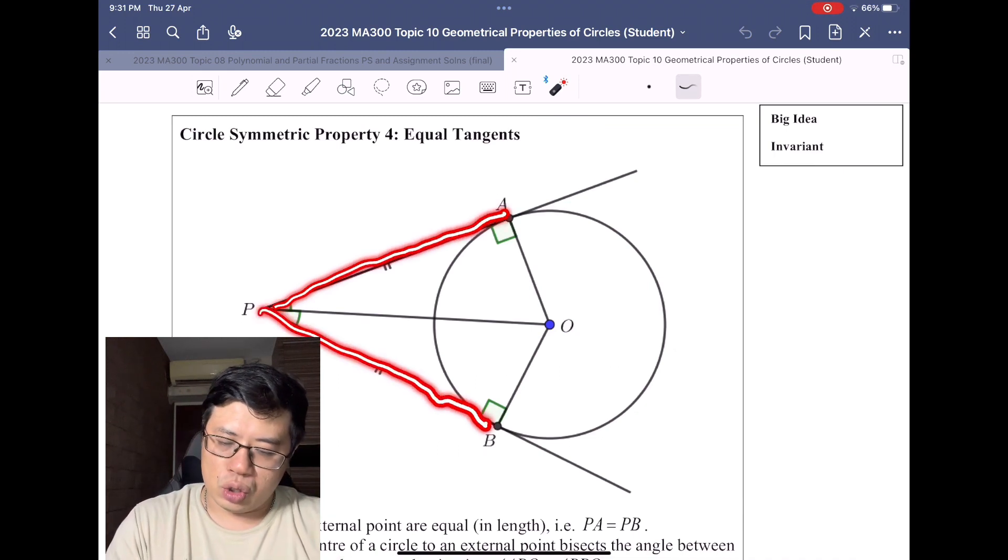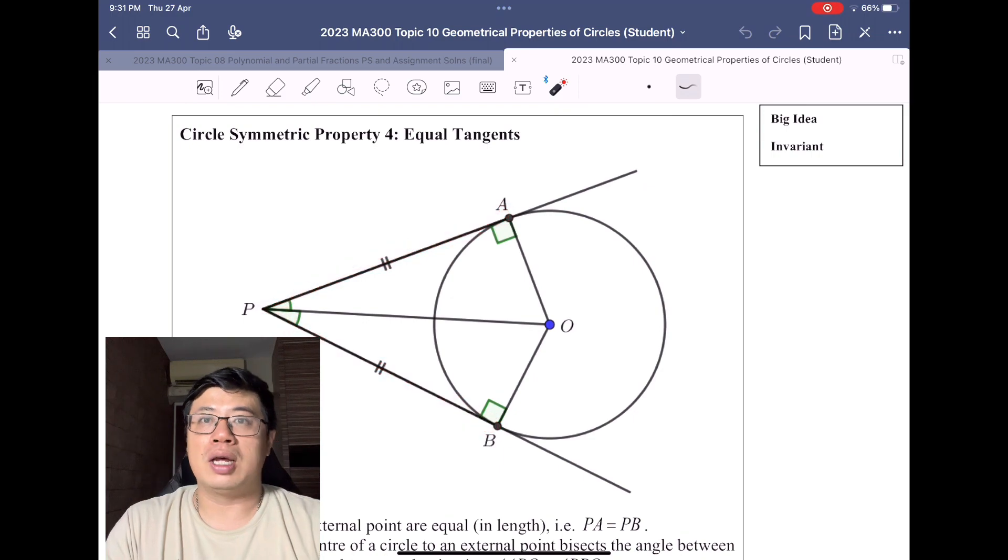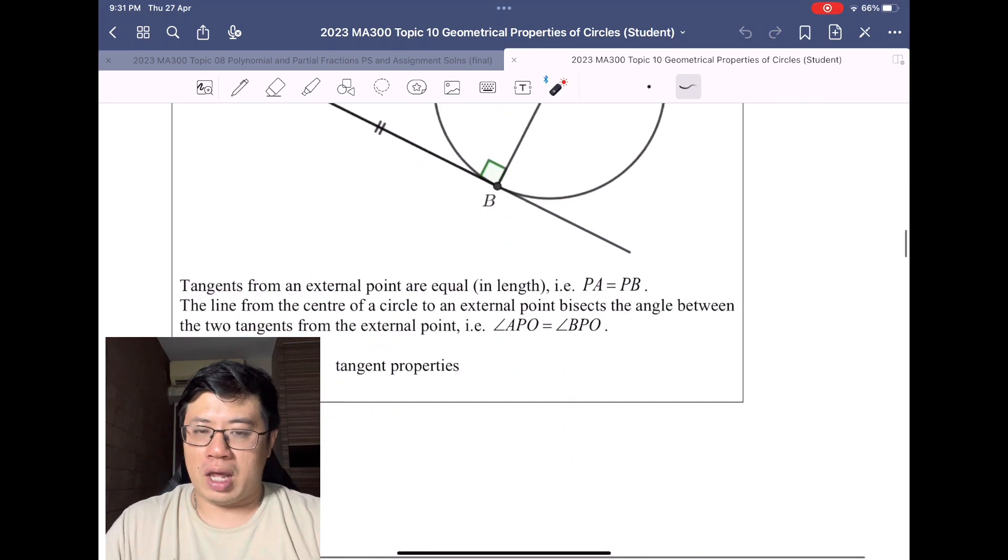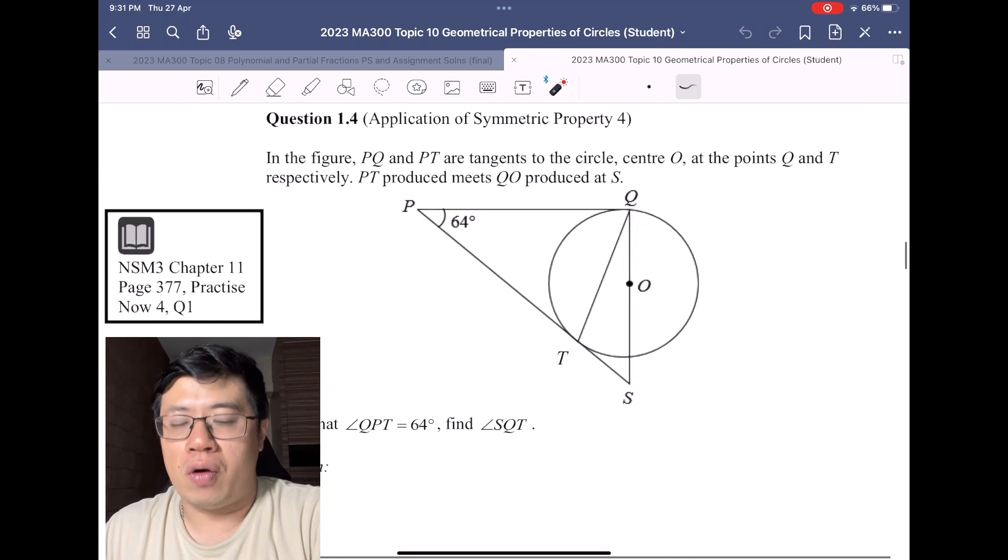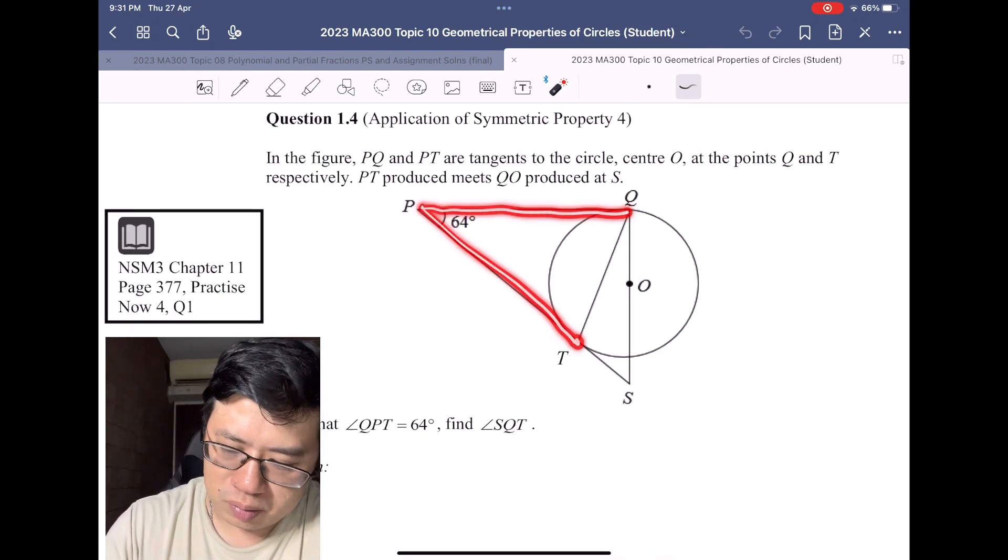...then this means that the two tangents will be equal. Okay, so with that we will look at question 1.4. Here we have PQ and QT are tangents to the circle.